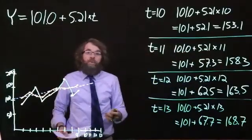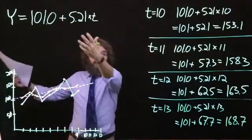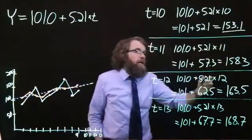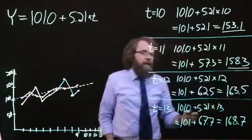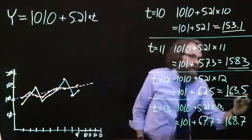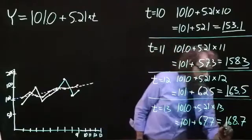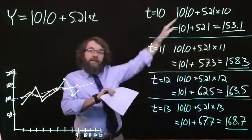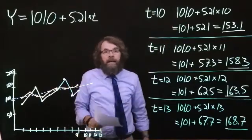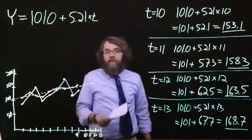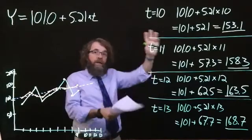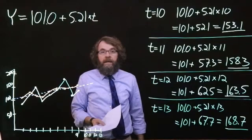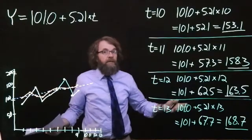Using the results of our linear regression we can make a straight line forecast. For period 10 we get 153.1, period 11 we get 158.3, period 12 we get 163.5, period 13 we get 168.7. We have projected the growth into the future and in the next step we will multiply those times the seasonal factors to get the final seasonalized forecast.